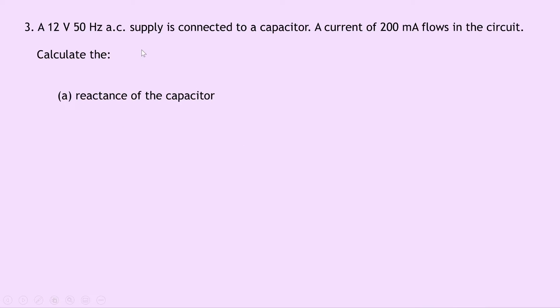Question three says that a 12 volt 50 hertz AC supply is connected to a capacitor. A current of 200 milliamps flows in the circuit. For part A it says calculate the reactance of the capacitor. So writing down what we know from the question, we're trying to find XC.